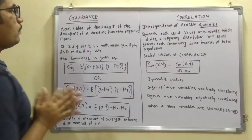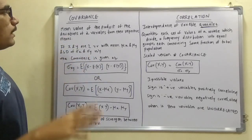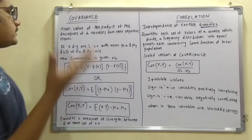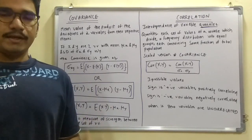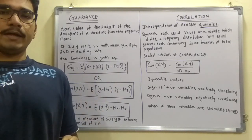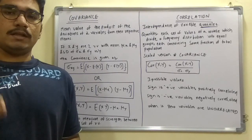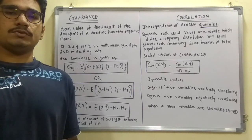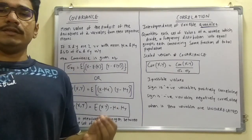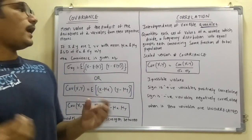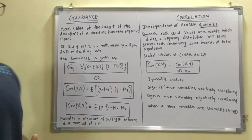Moving on to covariance — the basic definition says it is the mean value of the product of the deviations of two variates from their respective means. So if we are given two different random variates, these two random variates might have some means, and when they are shifted from their mean and multiplied together, that product is called the covariance.